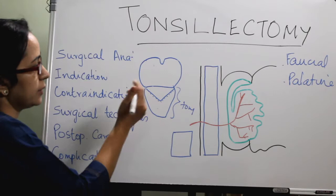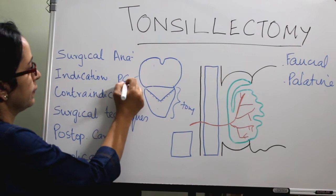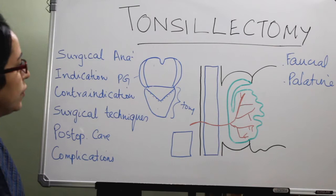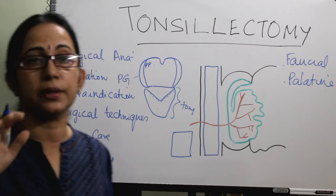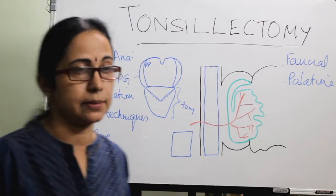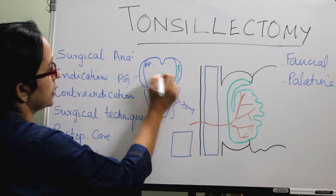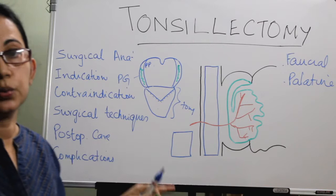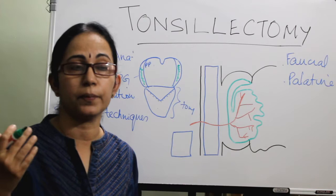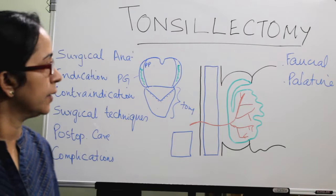The anterior pillar runs from the palate superiorly down to the tongue — that is the palatoglossus muscle. The posterior pillar goes towards the posterior pharyngeal wall — that is the palatopharyngeus muscle. So the anterior pillar is formed by the palatoglossus and the posterior pillar by the palatopharyngeus. In between these two pillars lies the tonsil, situated in the tonsillar fossa. When the tonsil gets hypertrophied, you cannot see the posterior pillars.